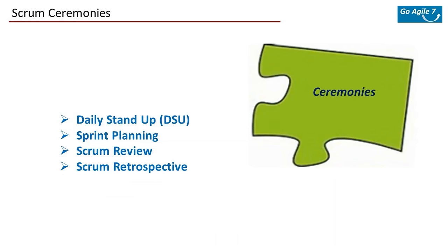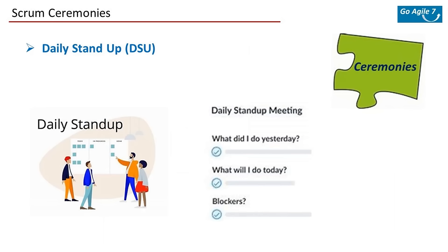Next, let's look at Scrum ceremonies — basically a set of meetings. There are four such ceremonies collectively called Scrum ceremonies. The first is the Daily Stand-up (DSU). Every day when you start, you begin with a short 15-minute meeting. Each member shares what they have done so far (yesterday), what they plan to do today, and whether they're stuck with any bottlenecks or impediments.